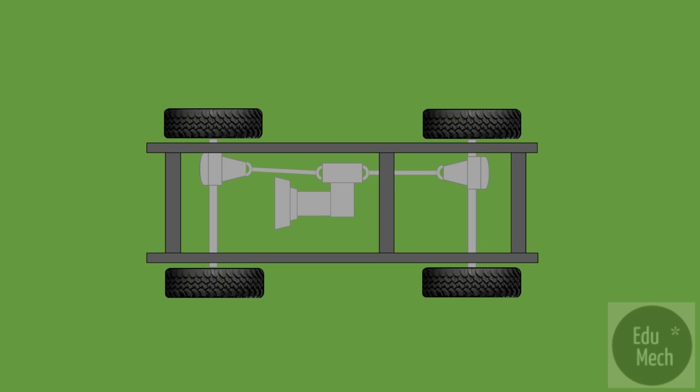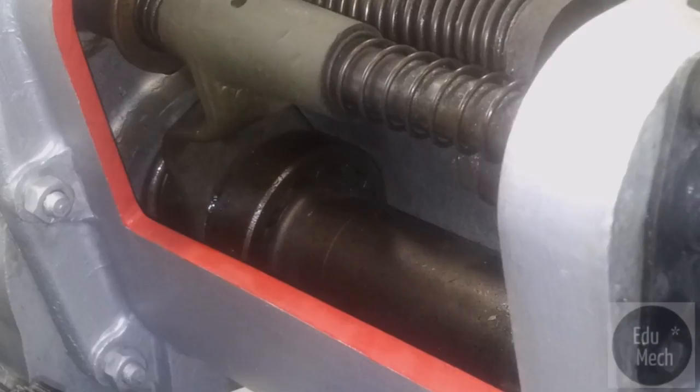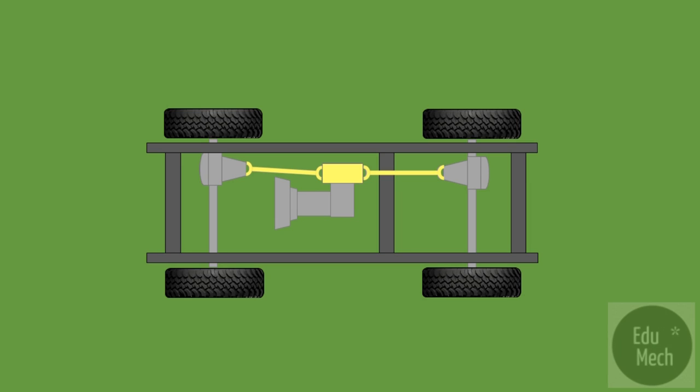When four-wheel drive is engaged, the front axle is brought into drive by means of a dog clutch in the transfer box. The drive is transmitted through both the front and the rear axle assemblies, and differential action occurs on both.